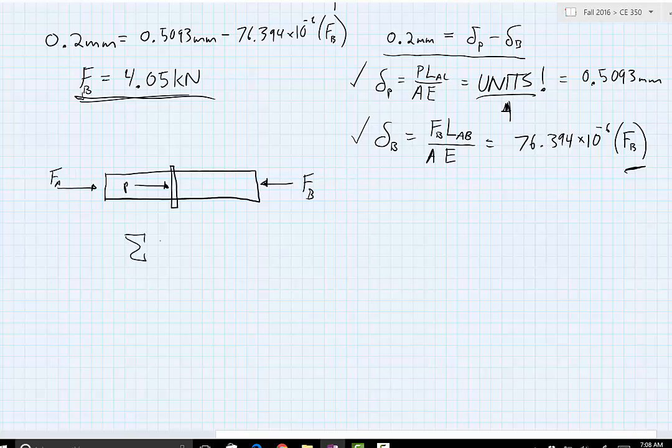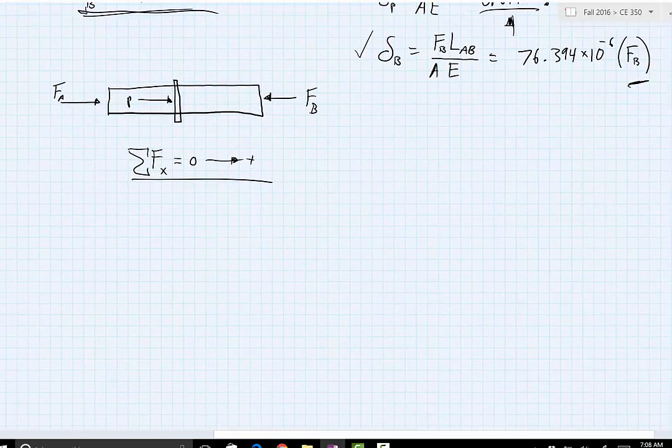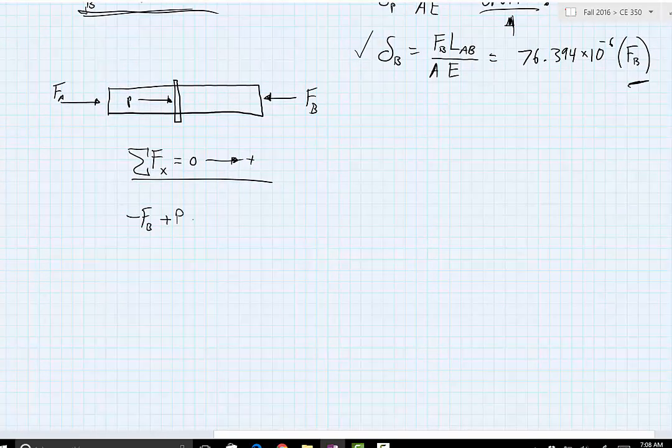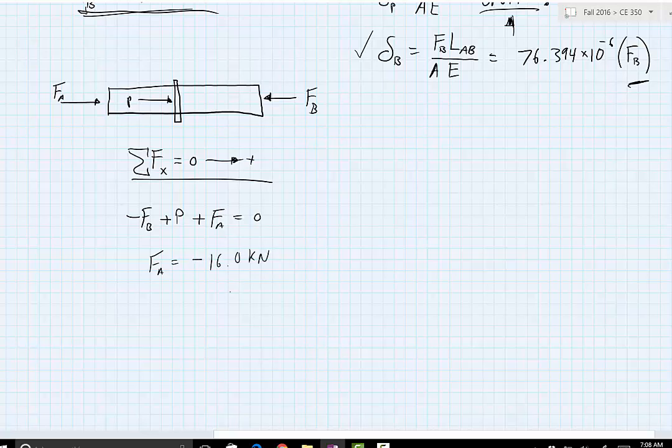Simple statics. We can just do our sum of the forces in the x direction equals 0, positive going this way. So then we have negative F sub B plus P plus F sub A equals 0.